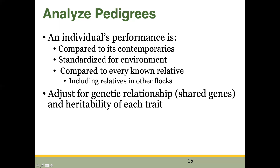So we take our individual animal's performance information — he's compared to his contemporaries on his farm and ranch, standardized for environment because he was raised in a management group there. Then he's compared to every single known relative in the system, including relatives on other flocks. This is a way that we can separate environmental differences because we're testing similar genetic lines in multiple environments and multiple management strategies, all helping us parse out what differences in performance are due to genetics versus what are due to environmental differences.